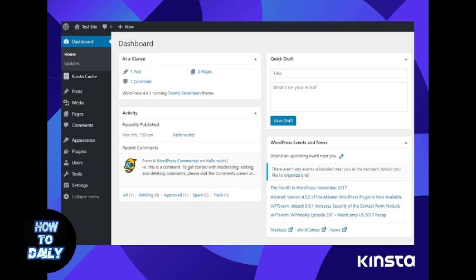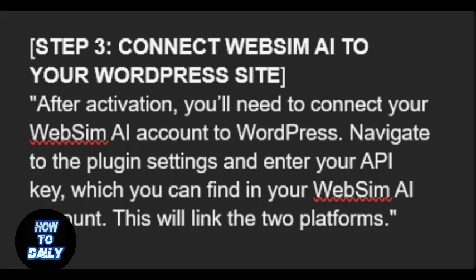After activation, you will need to connect your WebSim AI account to WordPress. Navigate to the plugin settings and enter your API key, which you can find in your WebSim AI account. This will link the two platforms.